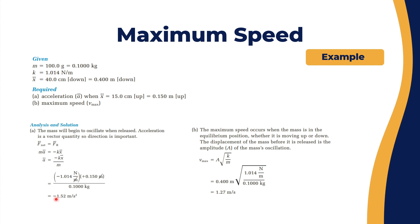Substituting the given values gives an acceleration of negative 1.52 meters per second squared. For the maximum speed, v_max equals A times the square root of k over m. The amplitude A is 40 centimeters, or 0.4 meters. So v_max equals 0.4 times the square root of 1.014 over 0.1 kilograms, which gives v_max equals 1.27 meters per second.